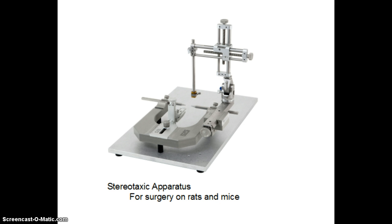What we see here is the stereotaxic apparatus that is used for rats and mice. There are the ear bars in the center which are going to help hold the head steady, and then you'll see the various arms with the little screws on them, and that's going to allow you to move the electrode or the cannula left and right, or as we'll refer to it as lateral or medial.